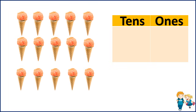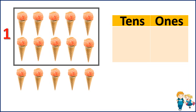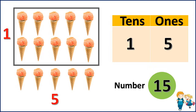Now let's take another set of examples. Here we have some ice creams. Now let's group them as 10 and start counting: 1, 2, 3, 4, 5, 6, 7, 8, 9, 10. So this is 1 ten. Now let's count the remaining: 1, 2, 3, 4, 5. So we have 5 ice creams. In the 10s place we have 1 ten, and in the 1s place it is 5. So the number is 15.